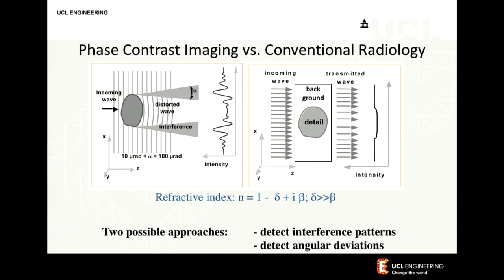Like any other part of the electromagnetic spectrum — visible light, radio waves — x-rays are waves. Waves change speed when they travel through different materials. If you imagine a wave coming into your object, it will go at a different speed inside than outside, and as a consequence the wavefront is distorted. Imagine you're sitting on a beach with a spot of oil in the sea: the wave enters the spot of oil, travels at a different speed, and when it comes out the other side the wavefront is distorted. You can use that distortion to create image contrast. Traditionally you look at the height of the crests, but the difference might be very small, and you might be better off using the distortion in the wavefront instead.